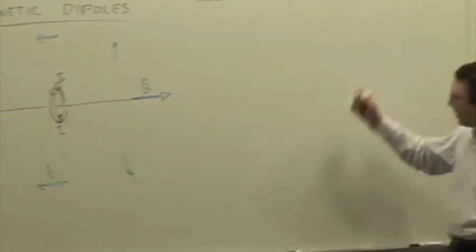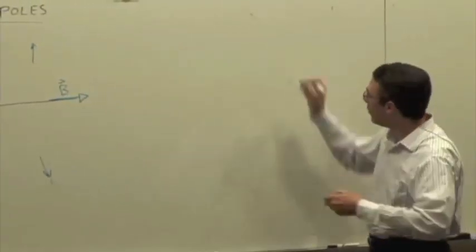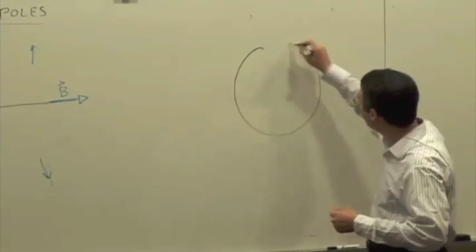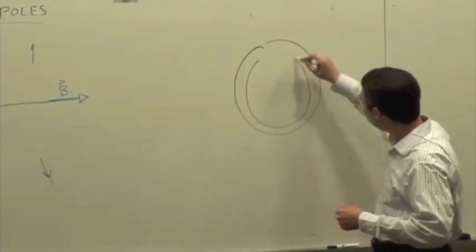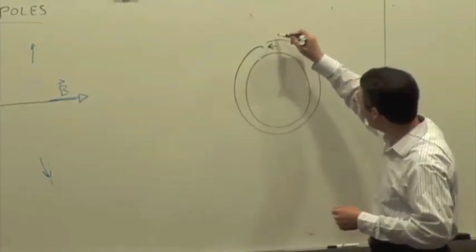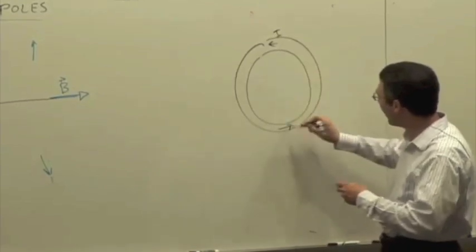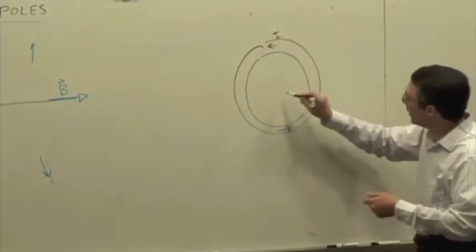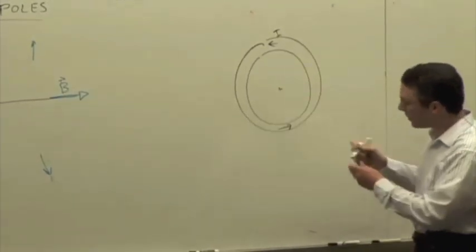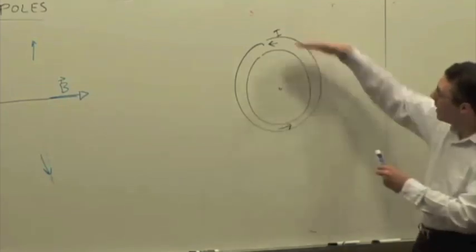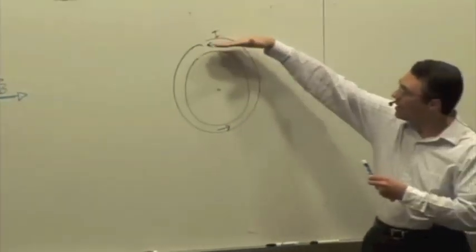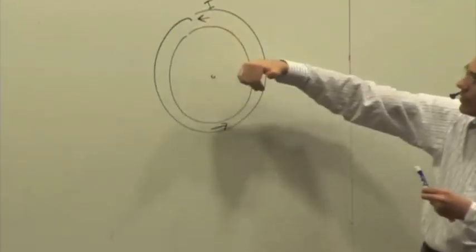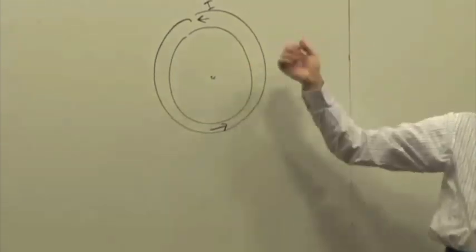But you could also say, if I look at it head-on, we could use the usual cross product and say that if the current's going like that and I want to find the direction of the magnetic field at the center, then I use delta L cross R hat, thumb points out. Once you have the field in the center, you know the field direction everywhere along that center line axis for a dipole.